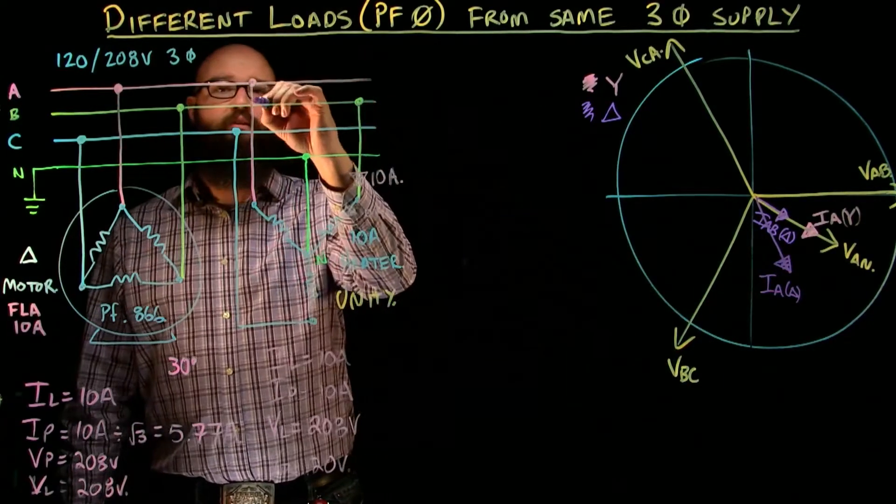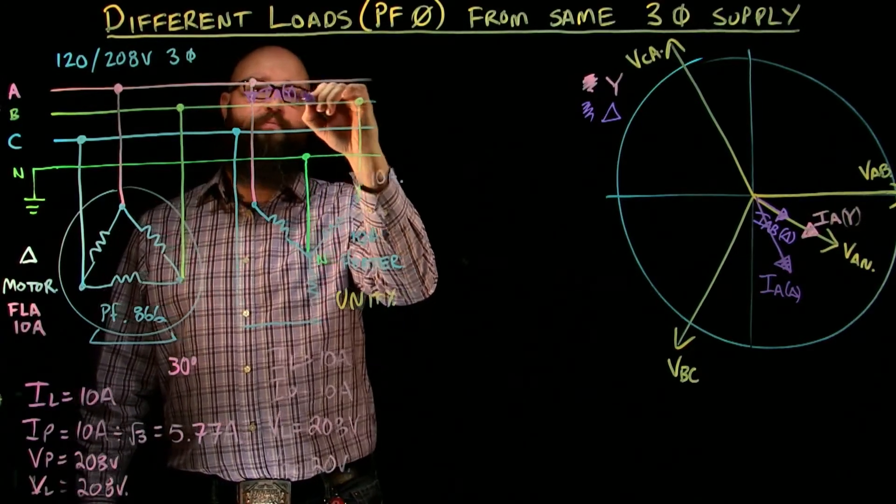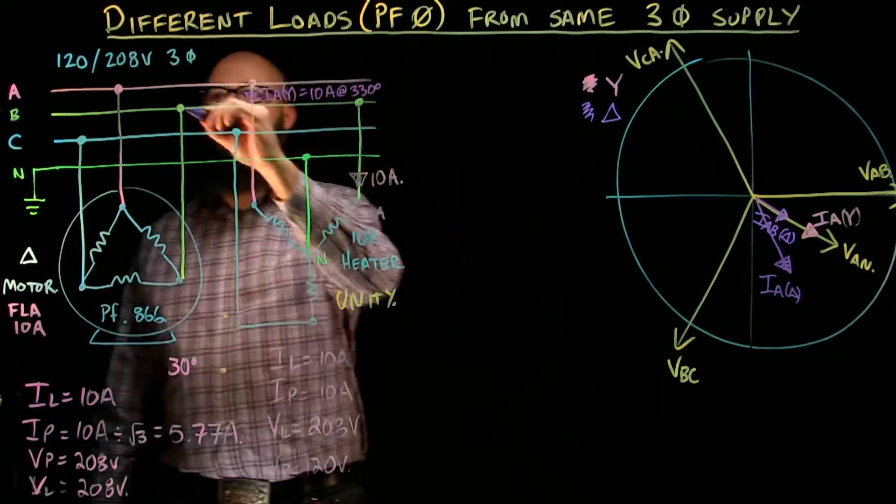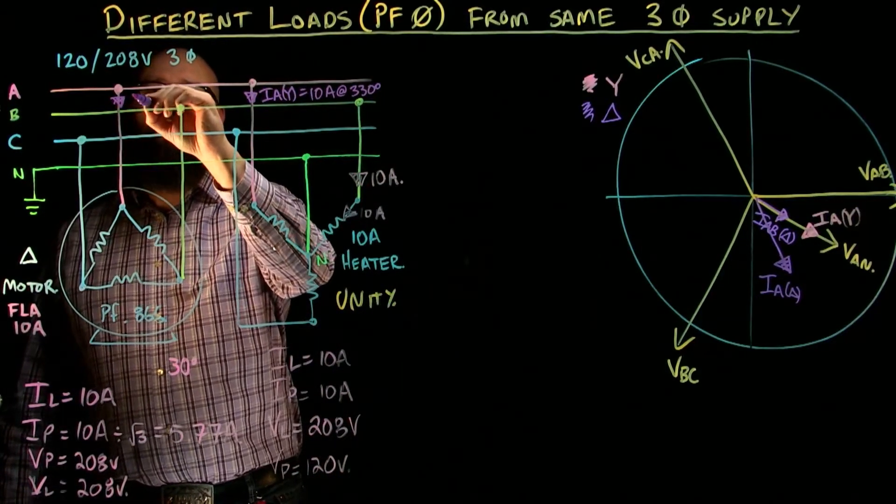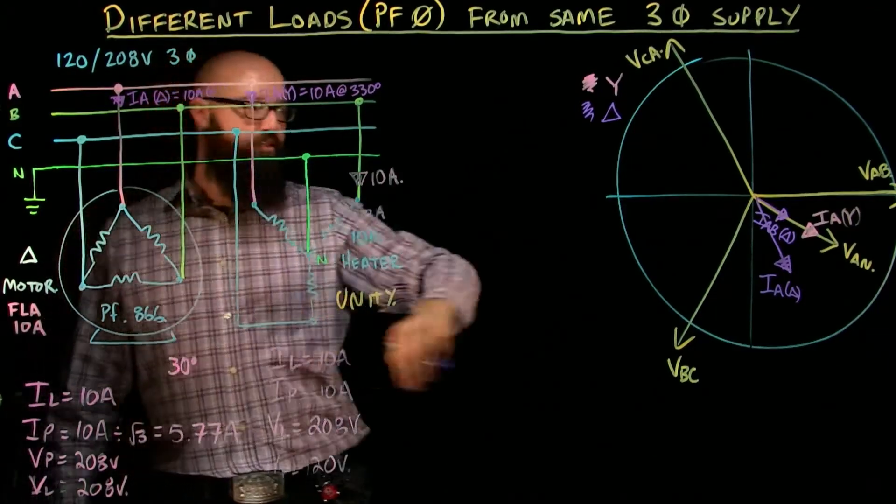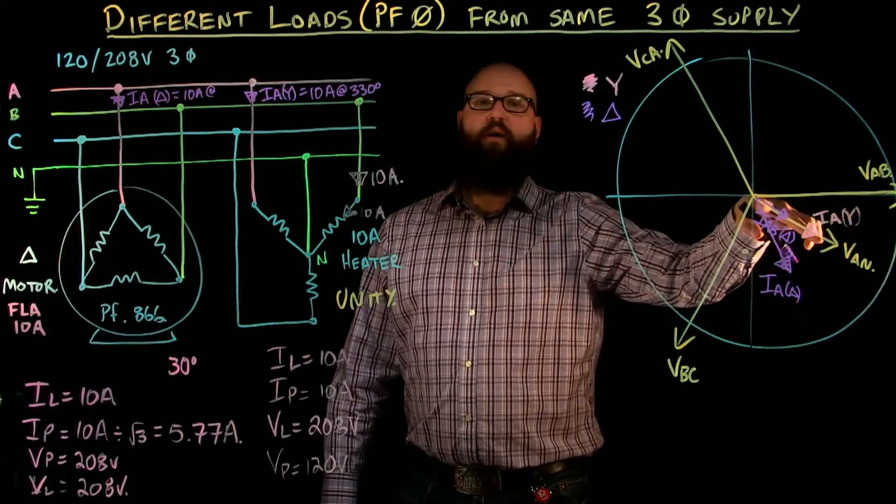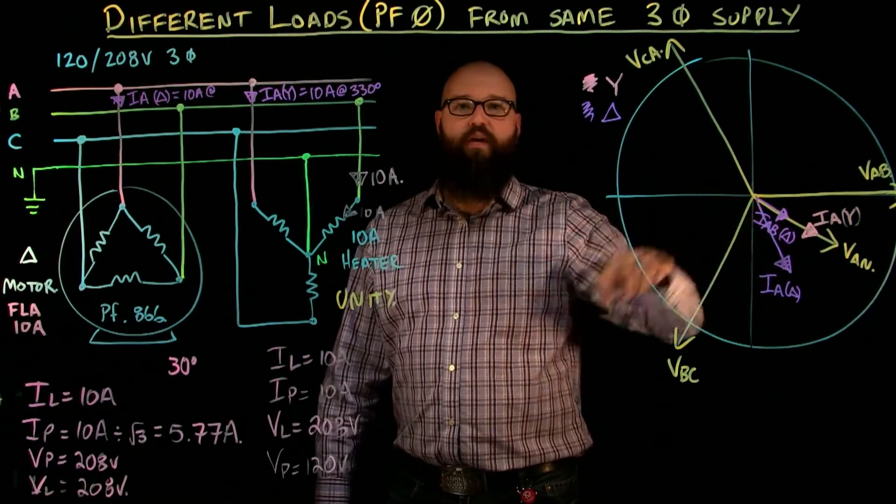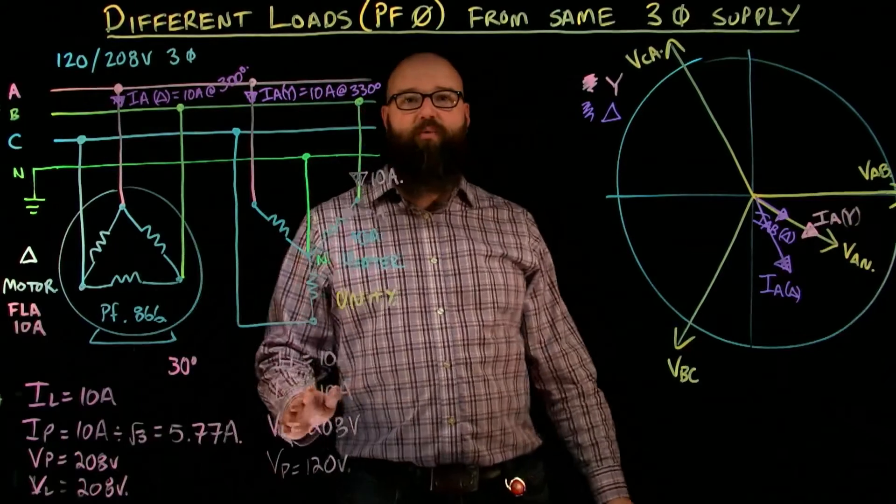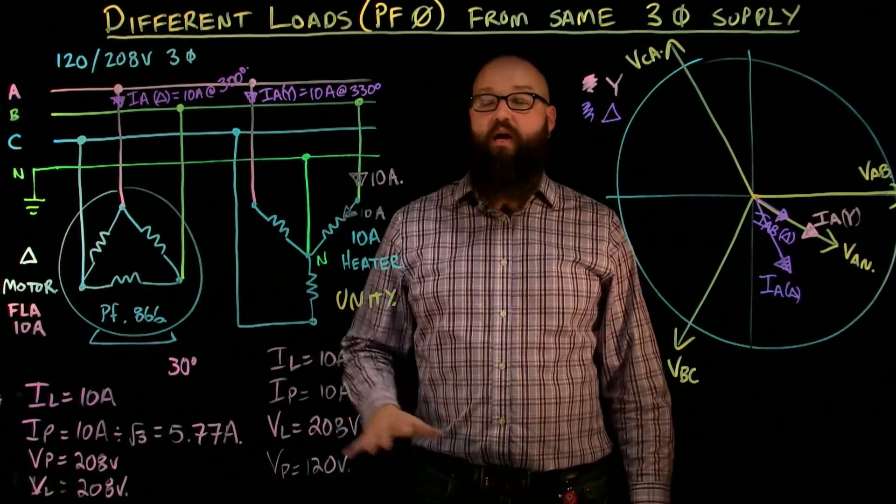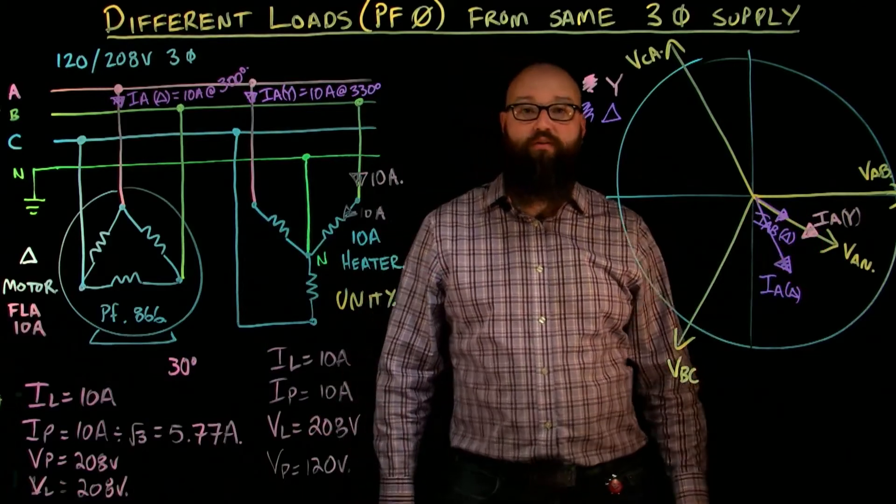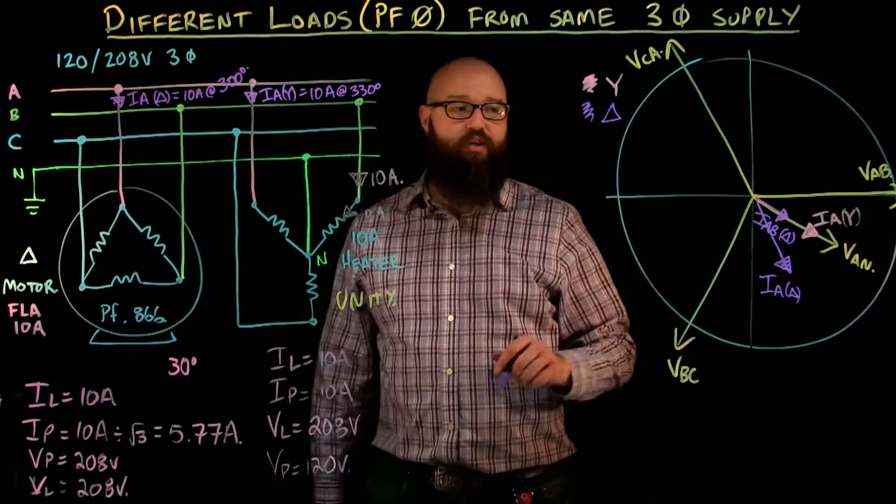So what we have here is Ia from our Y equals 10 amps at 330 degrees and we have Ia from our Delta is equal to 10 amps as well but it's at, well if we have zero minus 30 is 330 degrees minus another 30, my line current for my Delta is now at 300 degrees. With our unity example that we did in the previous video we were able to add these two line currents up to get a total line current. I can't do that anymore however because if you notice they're at different angles. So to add these together we're gonna have to add them vectorially so I'm gonna make an HV chart so that we can do that.